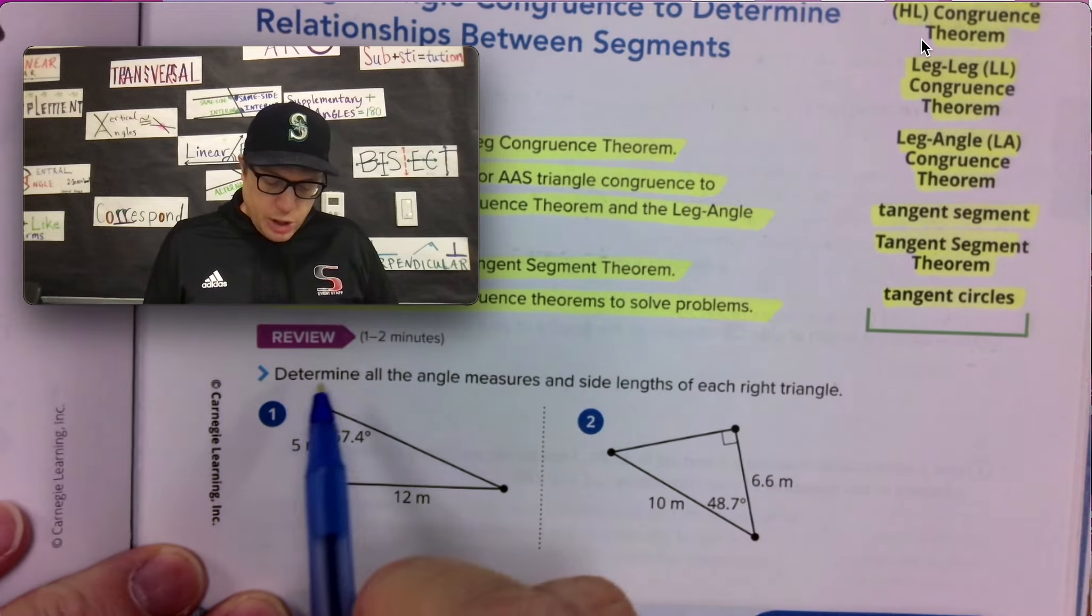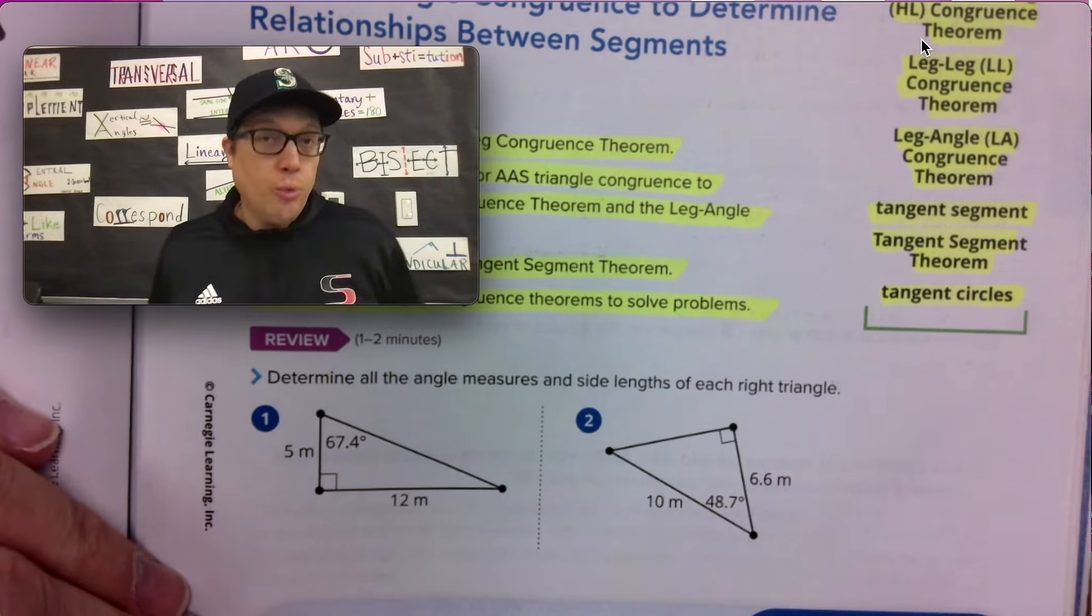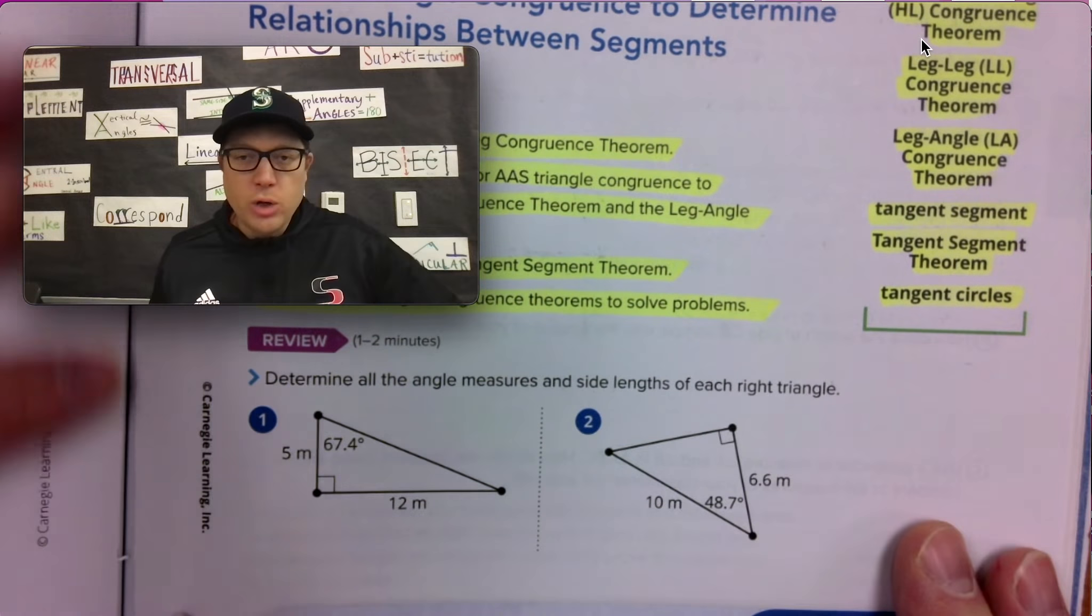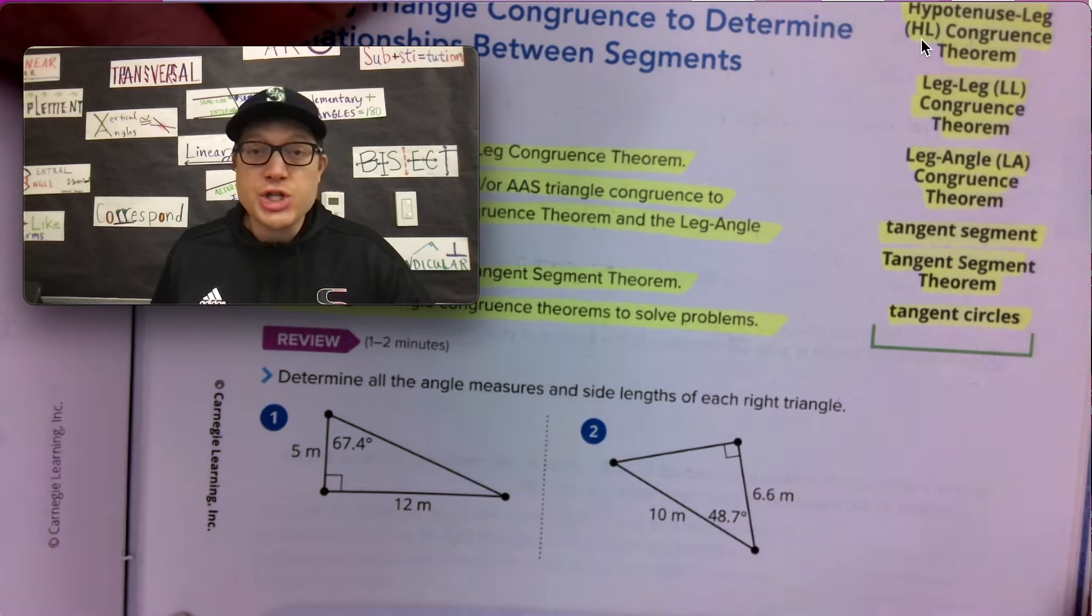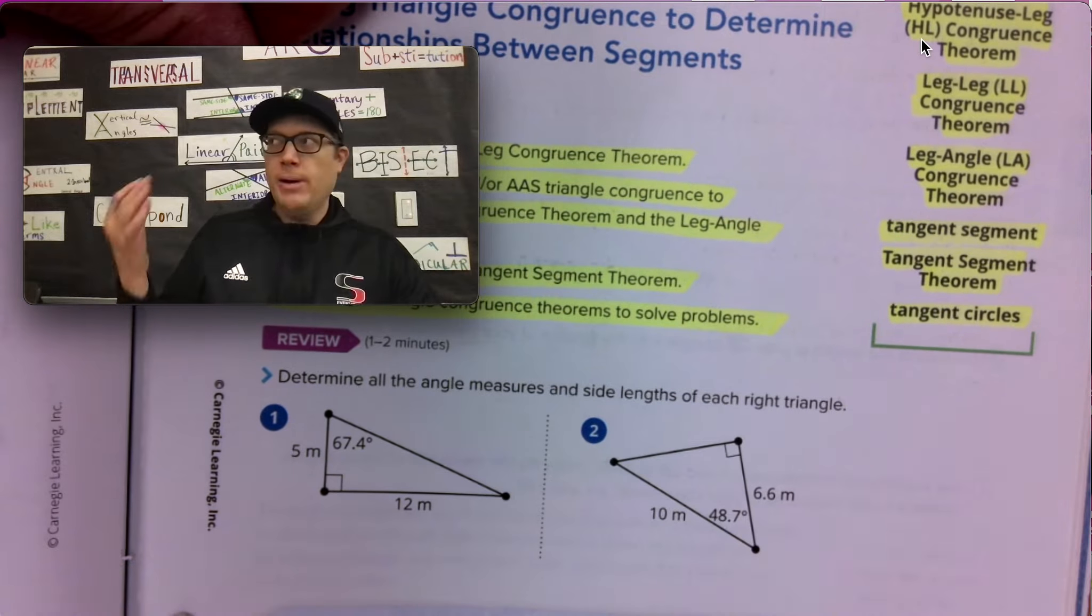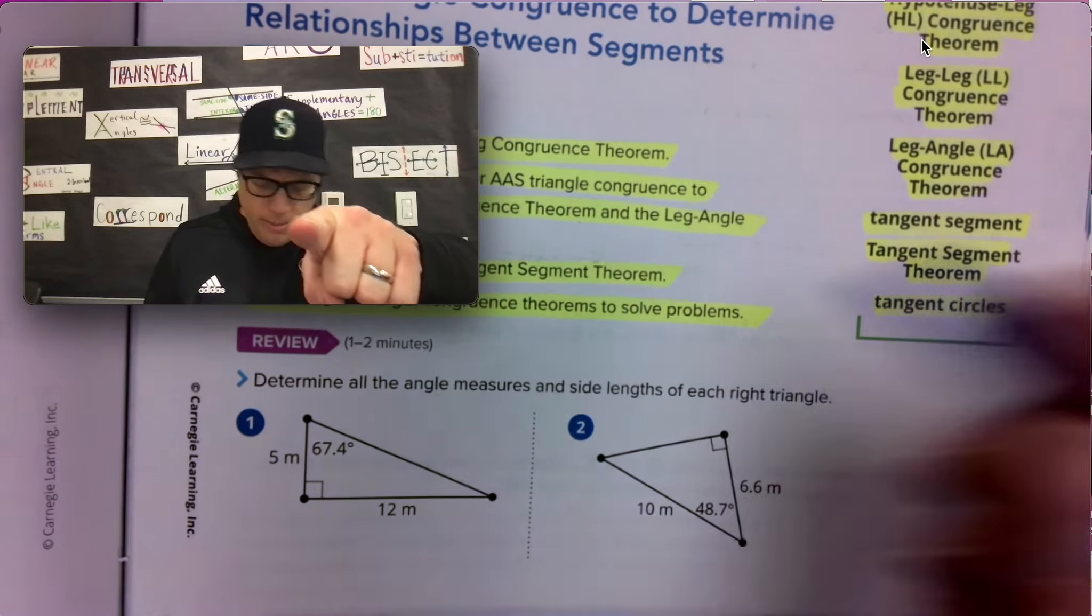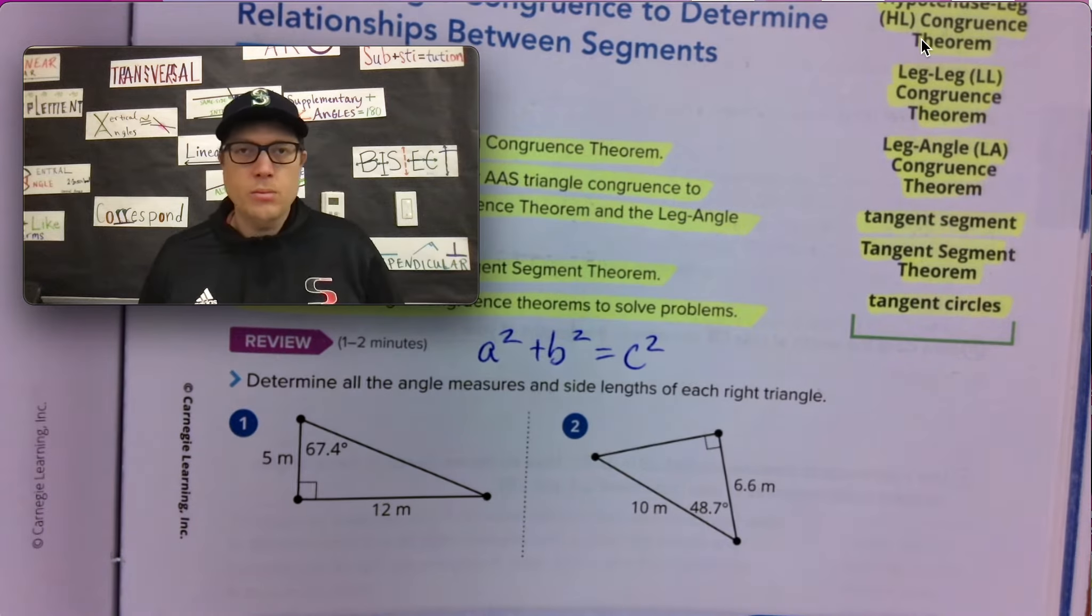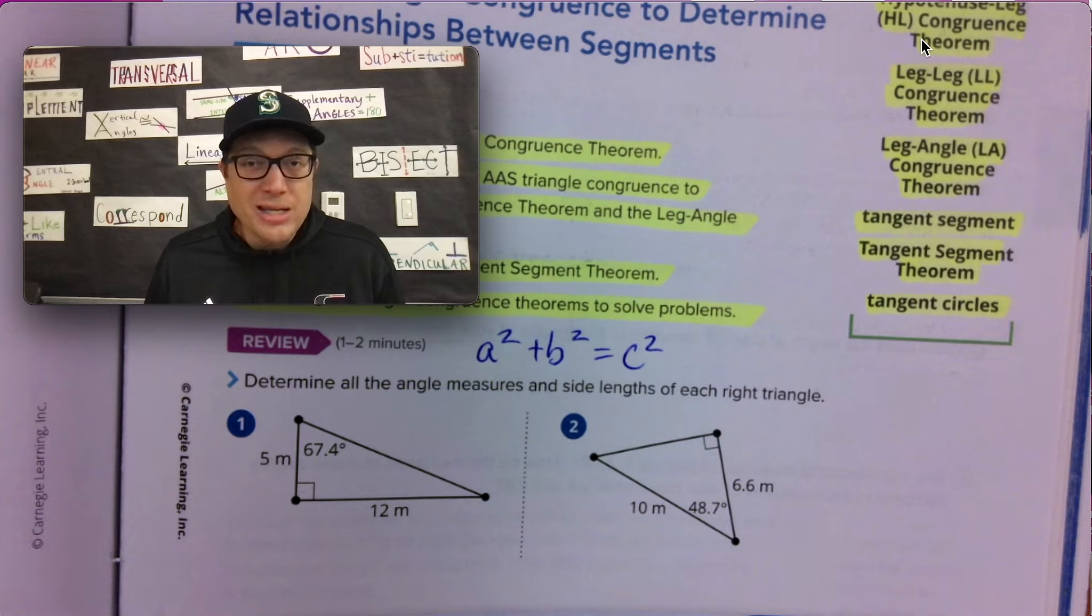Okay, here it is. Determine all the angle measures and side lengths of each right triangle, which will be a hint, by the way. We're going to be getting into right triangle congruence pretty steadily. So we might as well start seeing a lot of questions that have to do with right triangles. Oh my gosh, we didn't teach you finance when you were in high school, but we definitely made sure you remembered the Pythagorean theorem. Actually, come on now. If you don't know the Pythagorean theorem, where have you been? Pay attention.